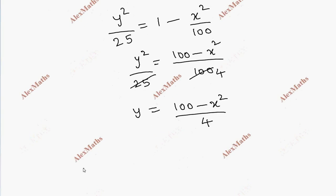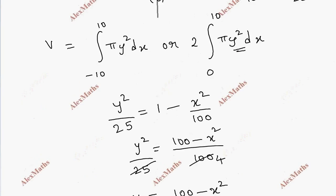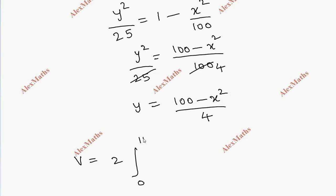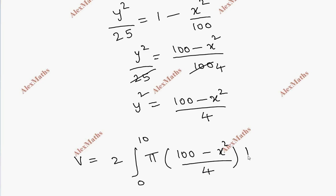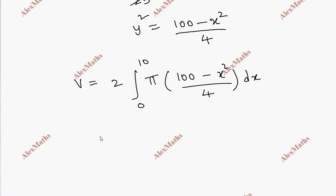So the volume is 2 times the integral from 0 to 10 of pi y² dx. Substituting y², this becomes pi times (100 minus x²) divided by 4, times dx. The constant pi over 4 can be taken outside the integral, giving 2 times pi over 4 times the integral of (100 minus x²) dx from 0 to 10.